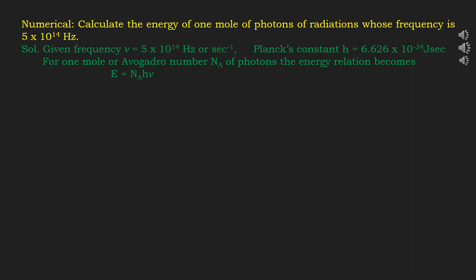Putting their respective values: E = 6.022 × 10²³ × 6.626 × 10⁻³⁴ J·s × 5 × 10¹⁴ s⁻¹, which comes out to be 199.51 × 10³ joule per mole, or 199.51 kilojoule per mole.